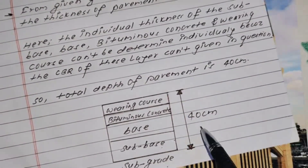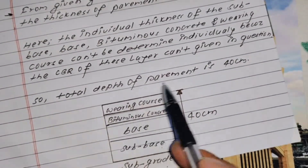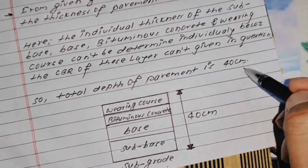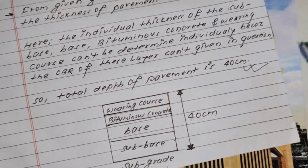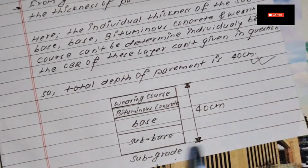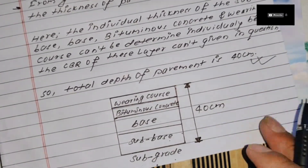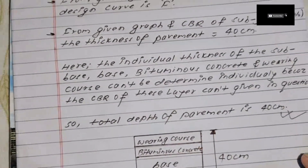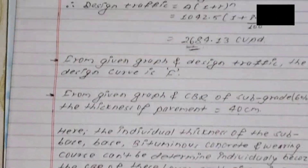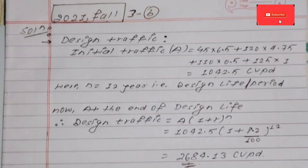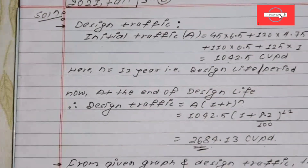The total depth of the pavement is 40 cm, obtained from the final figure on the CBR design chart. The pavement design is complete based on the given data.